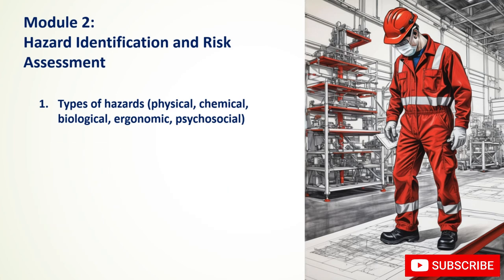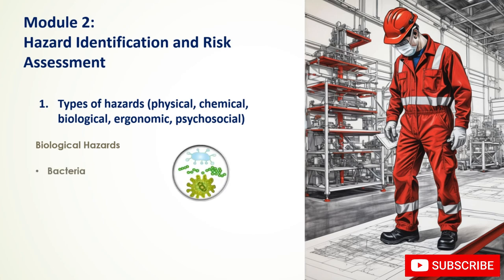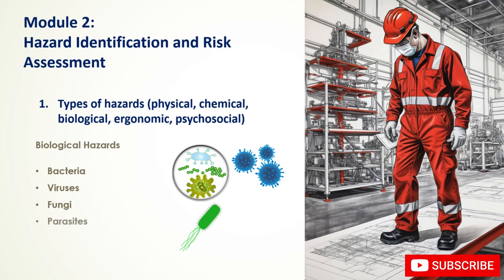Biological hazards come from living organisms or their products and can cause infections or diseases. Examples include bacteria, viruses, fungi causing respiratory or skin infections, parasites, and bloodborne pathogens such as HIV and hepatitis B transmitted through blood.